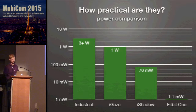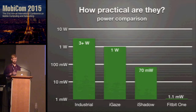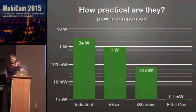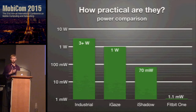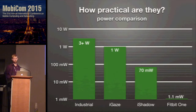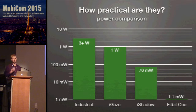Industrial devices usually consume on the order of several watts. The Eye Gaze project reported about one watt. With Eyeshadow we reported about 70 milliwatts, which sounds good compared to industrial trackers. But compared to wearables that have achieved real market penetration — like the Fitbit 1 at one milliwatt — there's still a ways to go before reaching realistic power consumption levels.